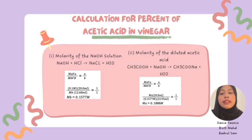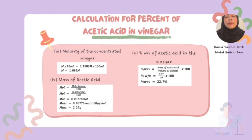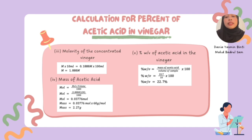The molarity of the NaOH solution is calculated as 0.1577 mol/L. The molarity of the diluted acetic acid is 0.1888 mol/L. The molarity of the concentrated acetic acid is 1.888 mol/L. The moles of acetic acid are calculated as 0.03776 mol. Multiplying by the molar mass of 60 g/mol gives the mass of acetic acid as 2.27 g. Finally, the weight/volume percent of acetic acid is calculated as mass of acetic acid over volume of sample times 100, giving 2.27%.